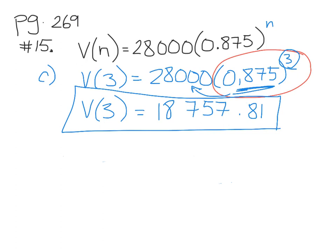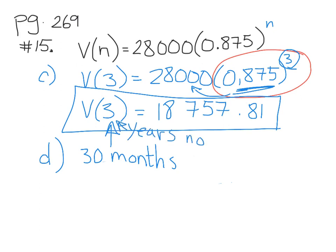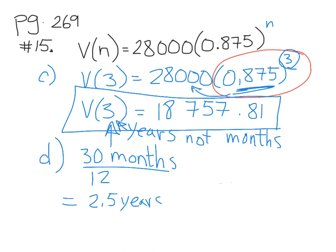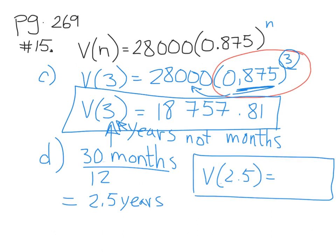Question D: please do not plug in 30 into that formula because it's in years, not months. If we want to plug in 30 months, we first divide by 12 — there are 12 months in a year — and get 2.5 years. So plug in 2.5 for the exponent. I'll let you finish that question on your own.